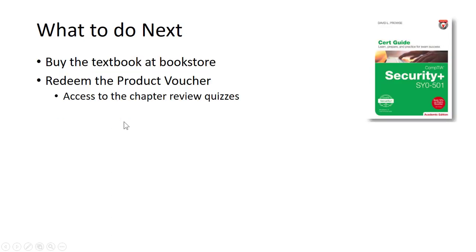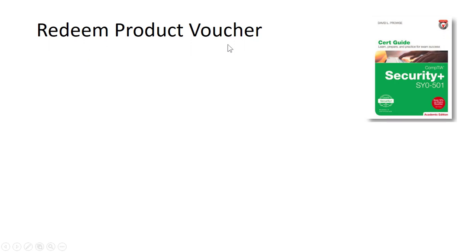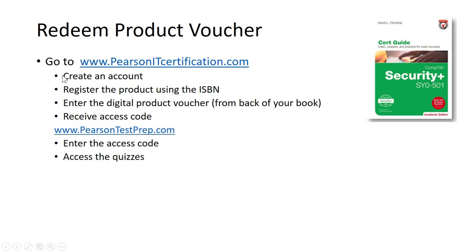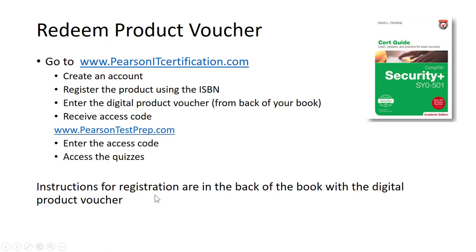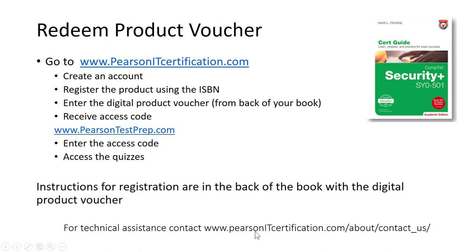What to do next: go to the CCBC bookstore, buy the textbook, and use the product voucher in the back to access the review quizzes. Redeeming the voucher involves several steps: go to PearsonITCertification.com, create an account, register the product using the ISBN, enter the digital product voucher, and receive an access code. Then go to PearsonTestPrep.com, enter that access code, and you'll have access to the review quizzes. Instructions are in the back of the book, and if you get stuck, contact Pearson's technical assistance at PearsonITCertification.com/about/contact-us.